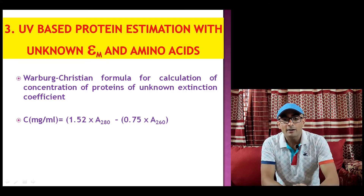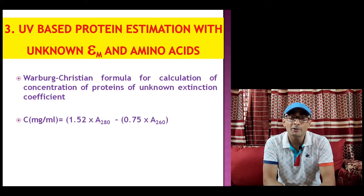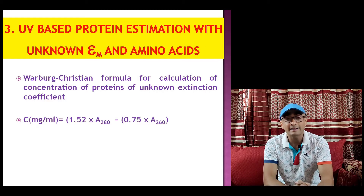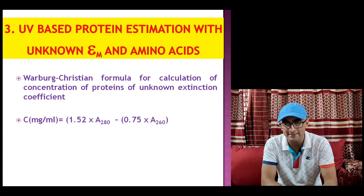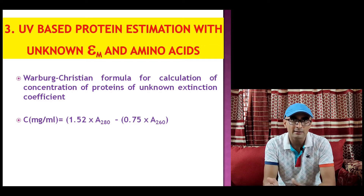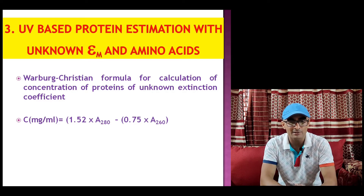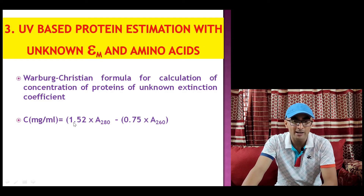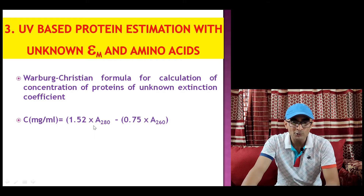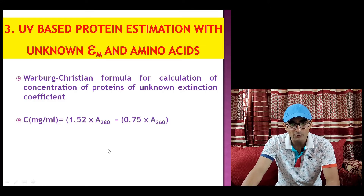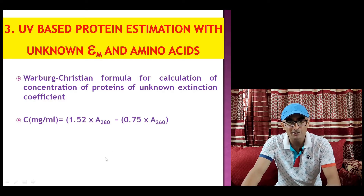Moreover, if the molar extinction coefficient is also not known and the amino acid composition is also not available, protein concentration can still be calculated using a formula called the Warburg-Christian formula, which is based on absorbance at 280 and 260 nanometers. This is generally done when the protein is contaminated with nucleic acid. In that case, concentration of protein in mg per ml equals 1.52 multiplied by absorbance at 280 nanometer minus 0.75 multiplied by absorbance at 260 nanometer.